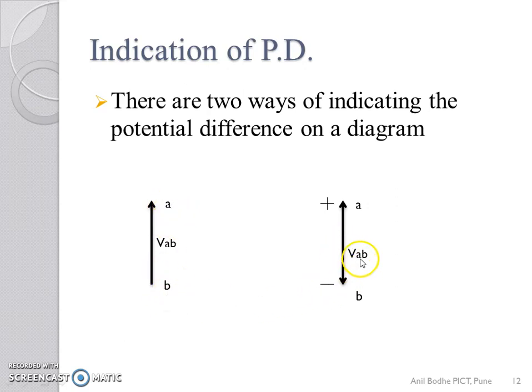And the second one is, it is indicated by a line with arrow at both ends and plus and minus signs at the ends.